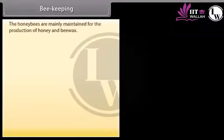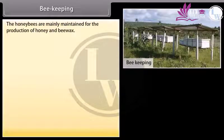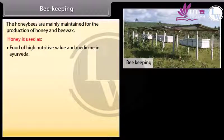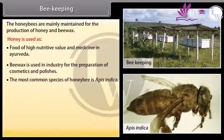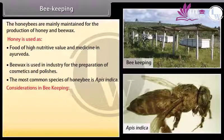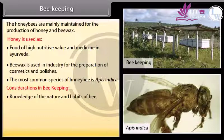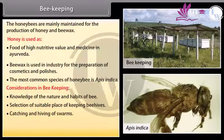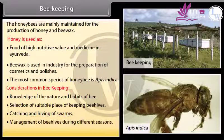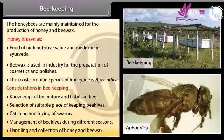Beekeeping. Honey bees are mainly maintained for the production of honey and bee wax. Honey is used as food of high nutritive value and in medicine in Ayurveda. Bee wax is used in industry for preparation of cosmetics and polishes. The most common species of honey bee is Apis indica. Considerations in beekeeping include: knowledge of the nature and habits of bees, selection of suitable place for beehives, catching and hiving of swarms, management of beehives during different seasons, and handling and collection of honey and bee wax.